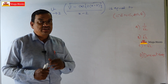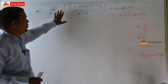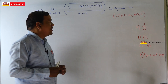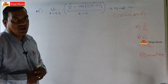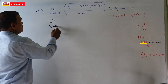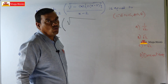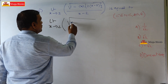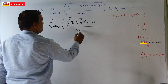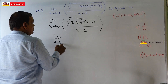Dear students, welcome to the second problem. Find the limit x→2 of √(1 - cos(2(x-2))) / (x-2). Options are also available. This is a very easy problem. This equals limit x→2 of √(2sin²(x-2)) / (x-2), using the identity 1 - cos(2a) = 2sin²(a).